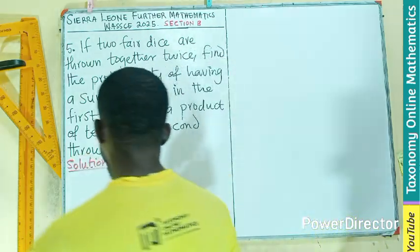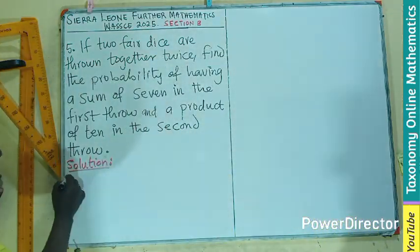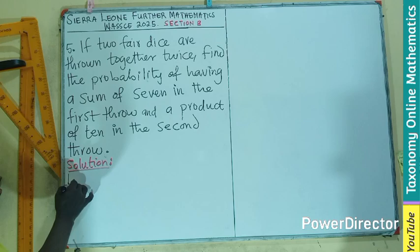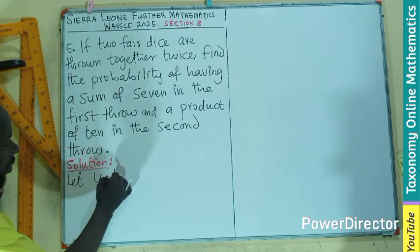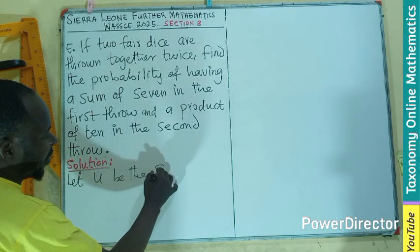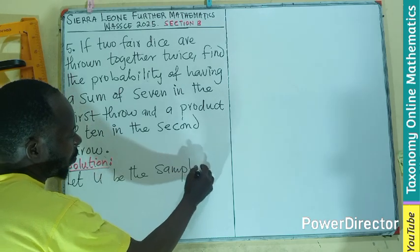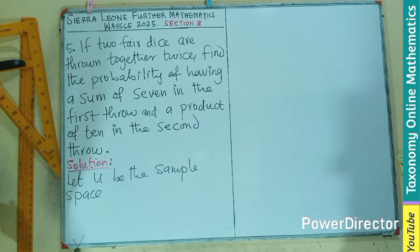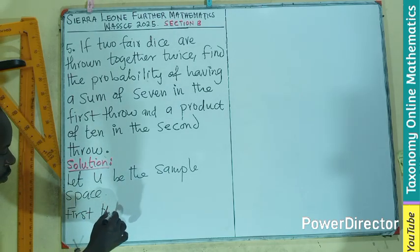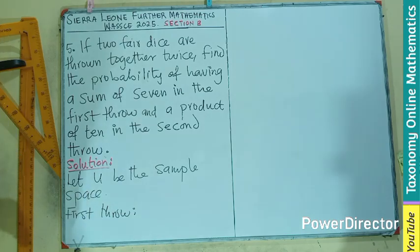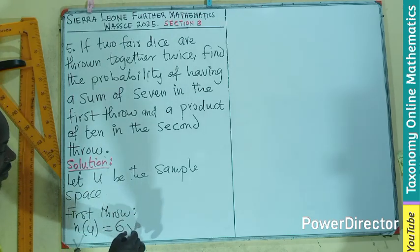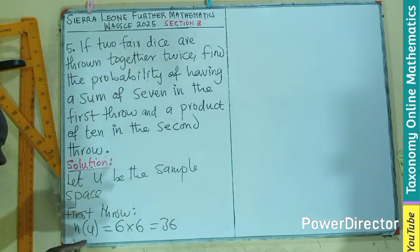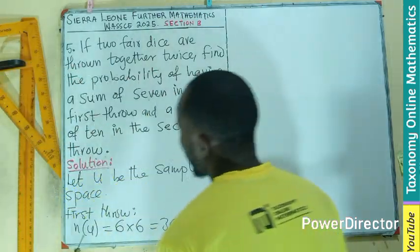The first one has six sample space, the second has six, so I'm having a sample space of 6 by 6. So let's say, let U be the sample space. For the first throw, my number of U will now be 6 by 6, which will give me 36.